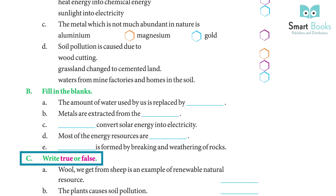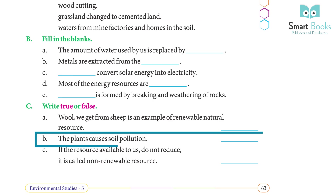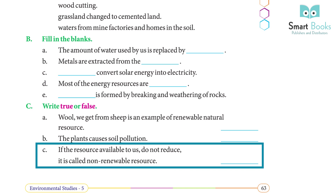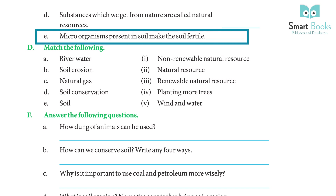True or False. a. Wool we get from sheep is an example of renewable natural resource — True. b. Plants cause soil pollution — False. c. If the resource available to us does not reduce, it is called non-renewable resource — True. d. Substances which we get from nature are called natural resources — True. e. Microorganisms present in soil make the soil fertile — True.